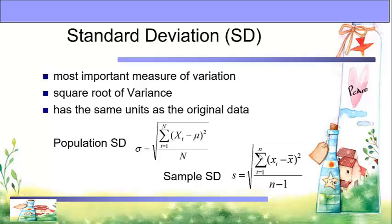After getting the variance, we just take the square root to get the standard deviation. For the population standard deviation, sigma equals the square root of the summation of (xi minus mu) squared divided by n. While the sample standard deviation, s, equals the square root of the summation of (xi minus x-bar) squared divided by n minus 1.